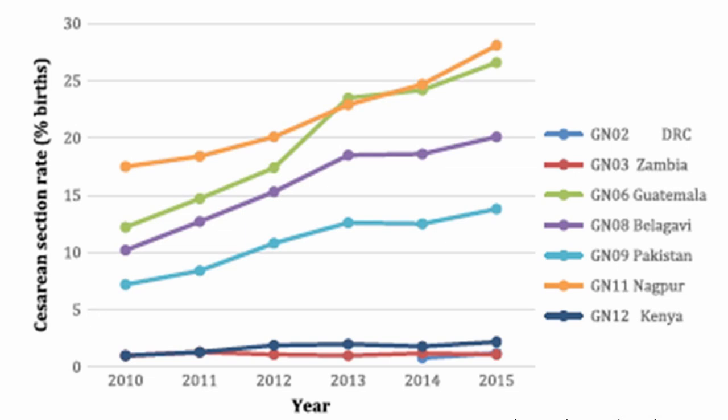Looking at this slide, it really tells me a tale of two cesarean birth stories. At the top of the slide, we see relatively high cesarean birth rates starting off, and in just five short years, those rates are doubling — going from around 16% up to almost 30%. That's a major abdominal surgery doubling in such a short timeframe. At the bottom of the screen, we see a very different experience: some sites may have doubled in rates, but they're doubling from 0.8 to 1.6 — still well below 5%. A very interesting finding.